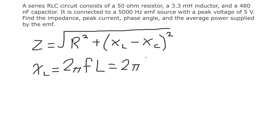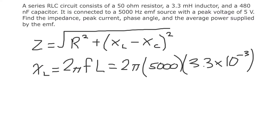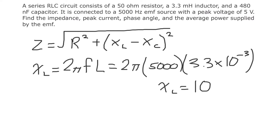We have 2π times 5000 hertz times 3.3 millihenries, where milli is times 10 to the negative 3. Plugging that into the calculator, XL equals about 104 ohms. Since this is like a resistance, the unit is ohms. That's our XL, and we'll use it in the impedance formula shortly.